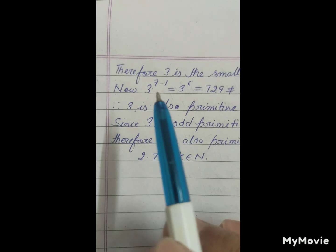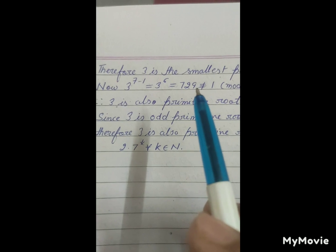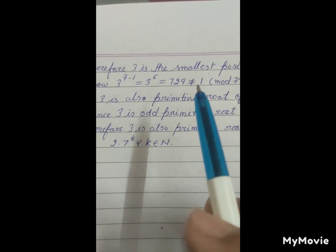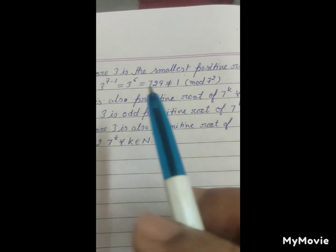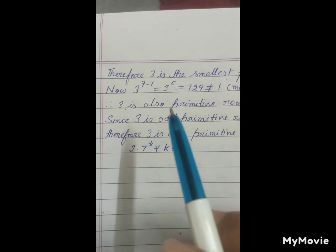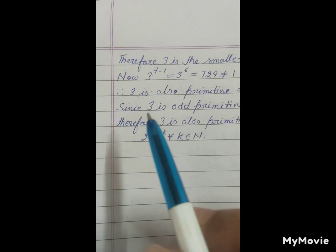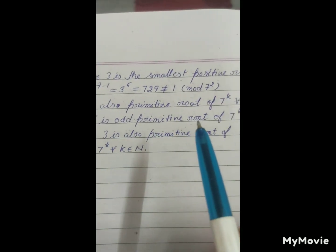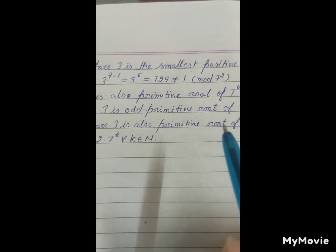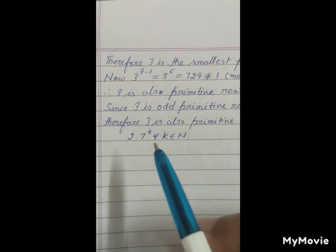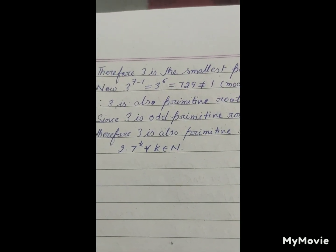So 3 is also a primitive root of 7^k for all values of k belonging to ℕ, since 3 is an odd primitive root of 7. Therefore, 3 is also a primitive root of 2 × 7^k for all values of k belonging to ℕ.